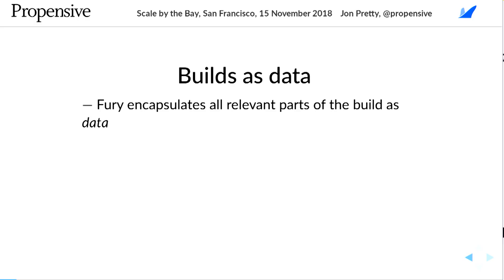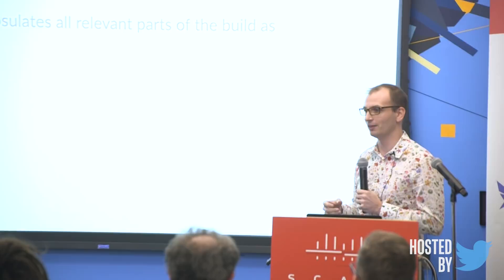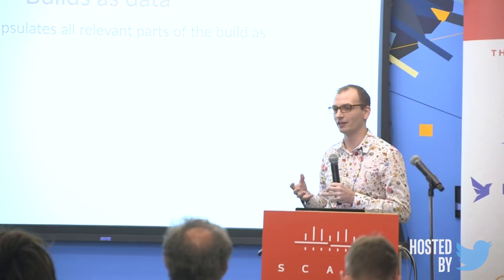All of the relevant parts of the build — all the information Fury needs to compile your Scala code, including multi-phase compilations with compiler plugins and dependency details about where to fetch those dependencies — is all represented by a data structure inside Fury's code. There is an ADT which represents that data.